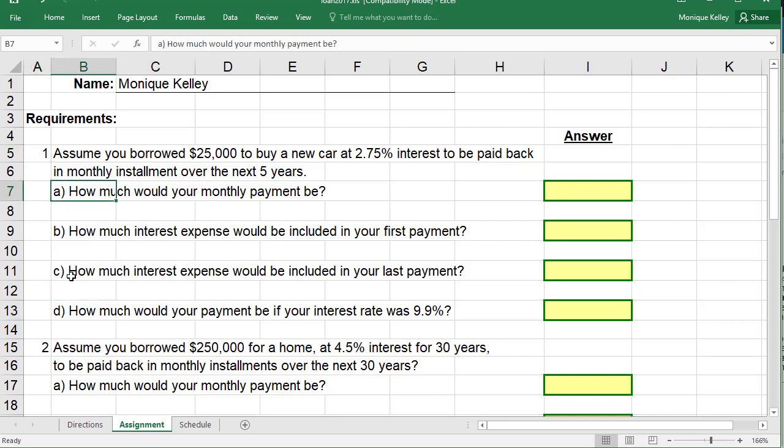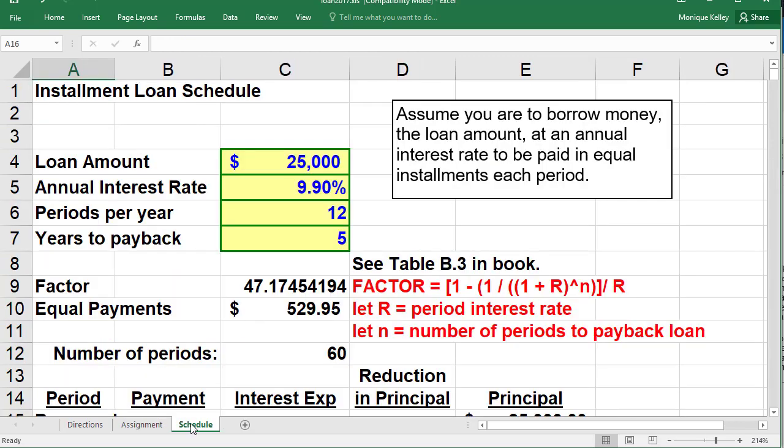So click on the schedule. You're going to use this table's amortization schedule to figure out the answer to those questions. So the loan amount is $25,000, and the interest rate is 2.75%, and the number of periods, this is monthly, it is 12. Number of years of the life of the loan is 5.